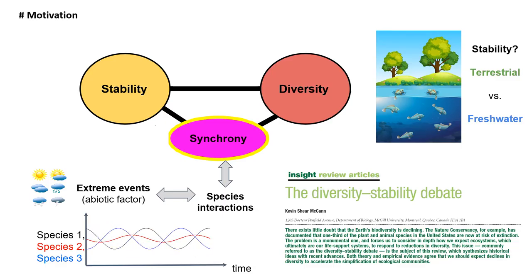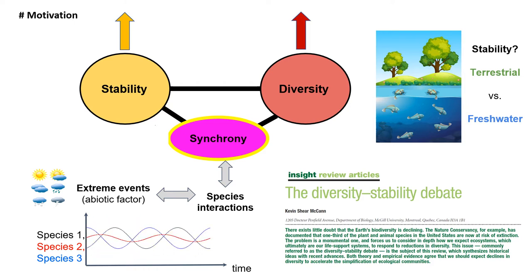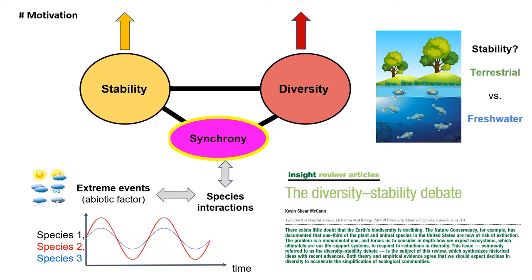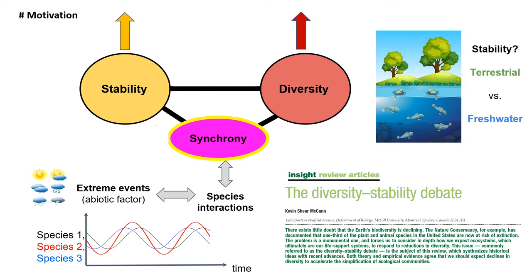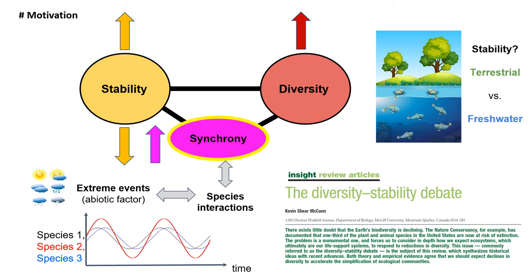I am motivated by the long-standing debate in community ecology: the diversity-stability relationship. The usual expectation is that community stability should increase with diversity or species richness. This relationship is also influenced by inter-specific interactions. Similarly behaving species make the community more synchronous, thus more variable or less stable. But this inter-specific interaction could be asymmetric due to extreme events.